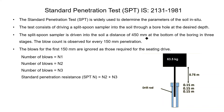The split spoon sampler is driven into the soil at a distance of 450 millimeter at the bottom of the boring in three stages. The blow count is observed for every 150 millimeter penetration. The blows for the first 150 millimeter are ignored as those are required for the seating drive.